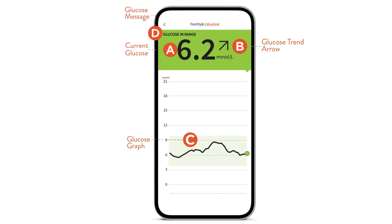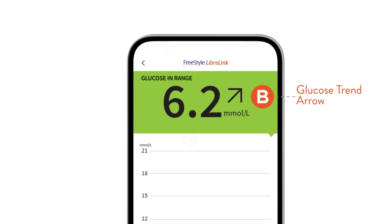Let's have a closer look at the trend arrow. The trend arrow shows you where your glucose levels are heading: rising, rising quickly, falling quickly, and changing slowly.